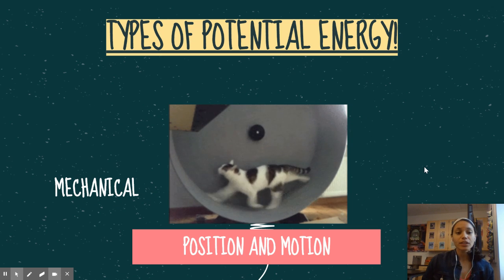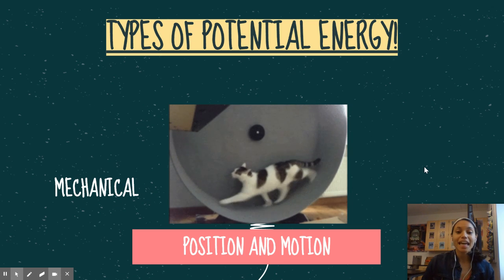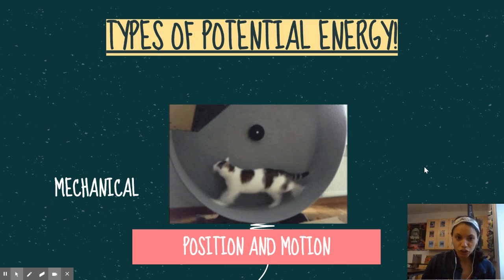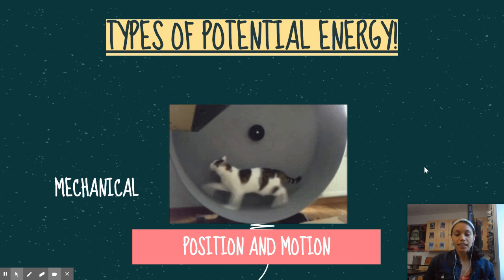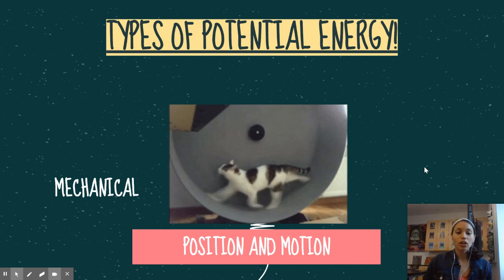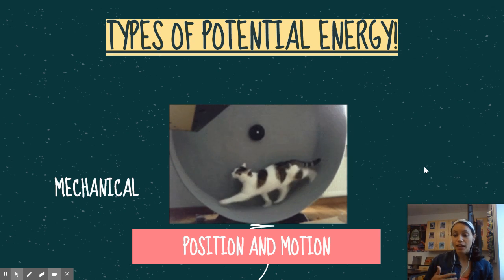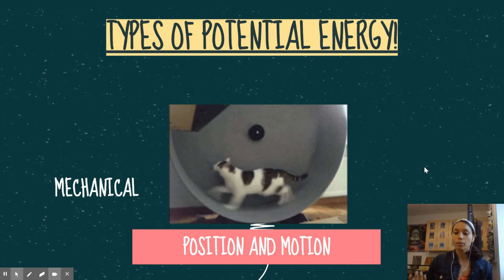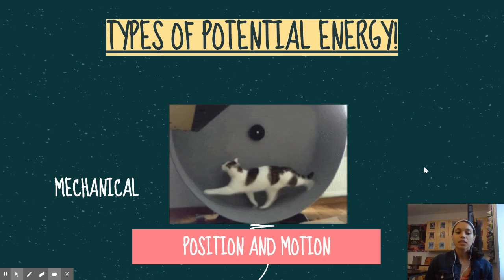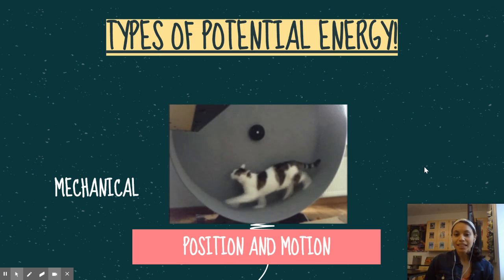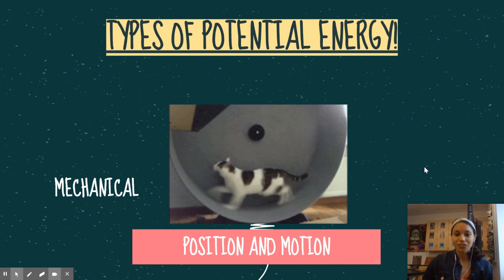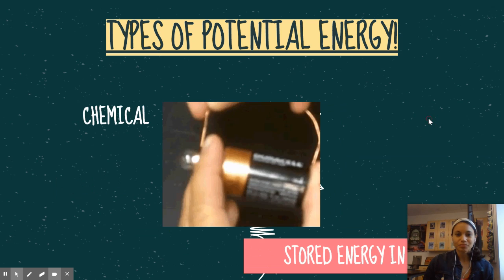The first thing we're going to talk about is mechanical energy. Mechanical energy depends on the position and motion of an object. So as this cat is moving in the wheel, it has mechanical energy.